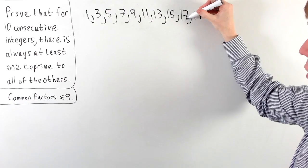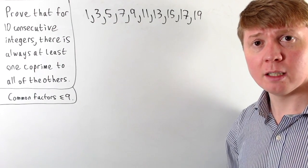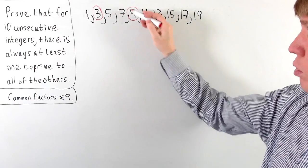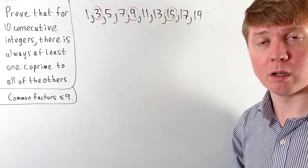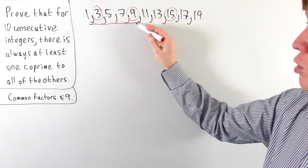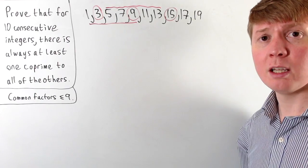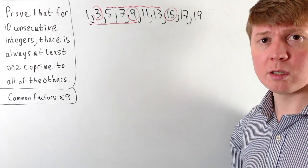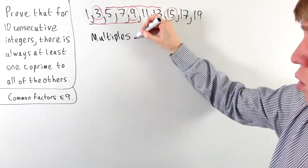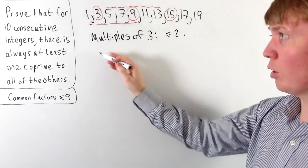Now we can start to think carefully about what our common factors could be. Could we have multiples of 3, and how many multiples of 3 could we have? Looking at odd multiples of 3 — we've got 3, 9, 15, 21 — you can see it's possible to have 2 multiples of 3 within 5 consecutive odd numbers, or depending how we choose them, we could have just 1 multiple of 3 if it's the middle of the 5 odd numbers. So we've got at most 2 multiples of 3 within our 5 consecutive odd numbers.